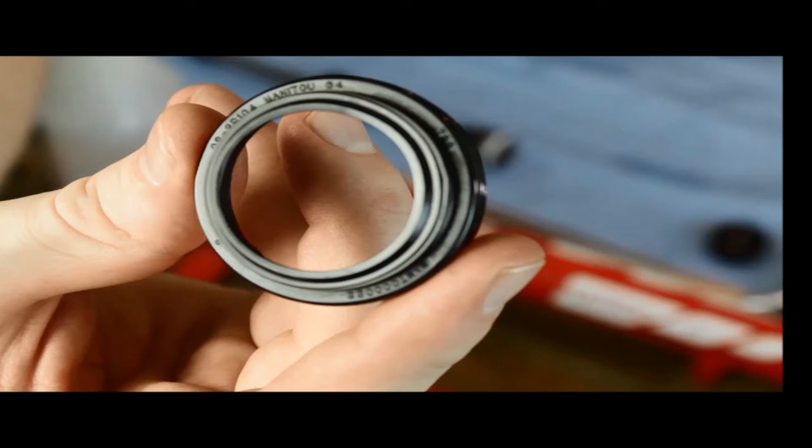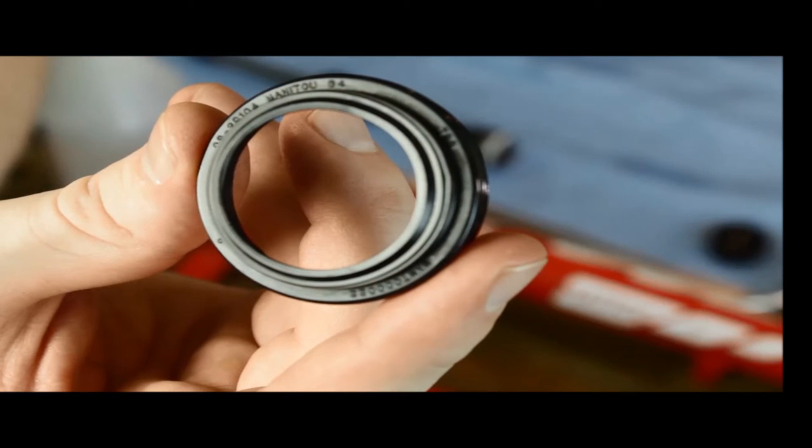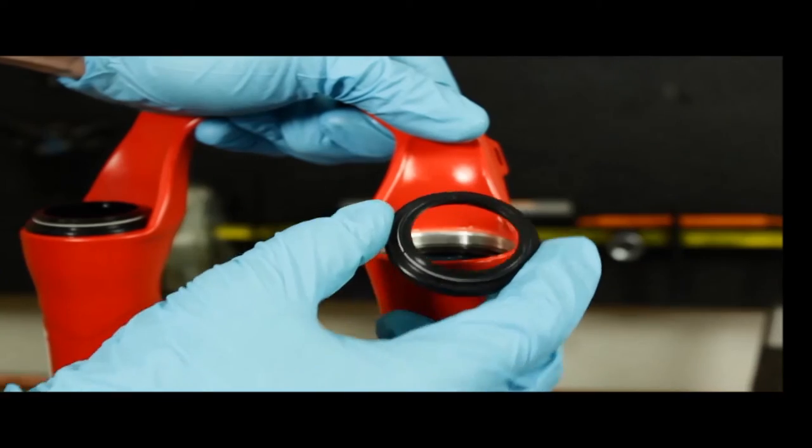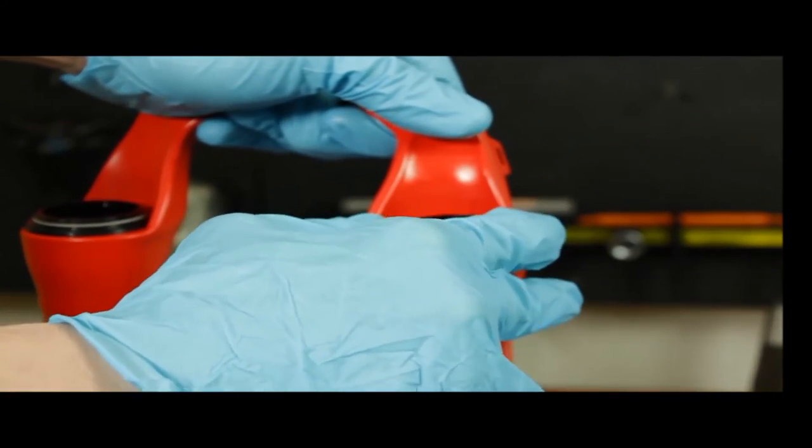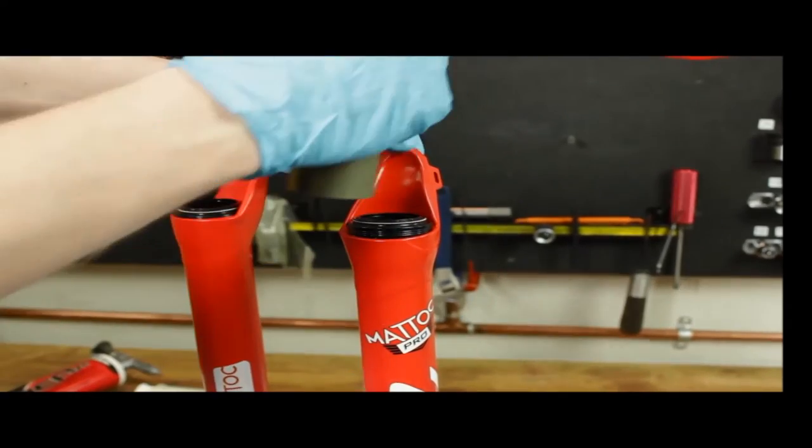The dust seal also has writing on its top surface. Now press the dust seal in until the top lip of the seal is flush with the outer casting.